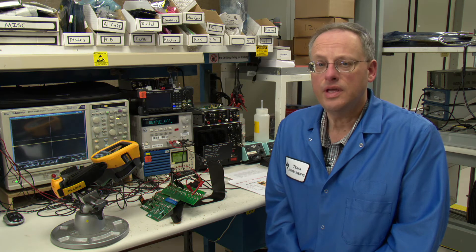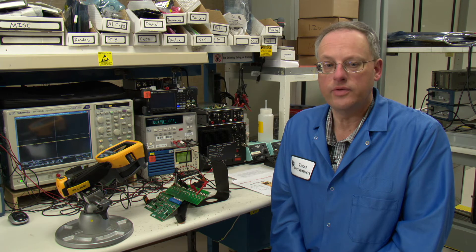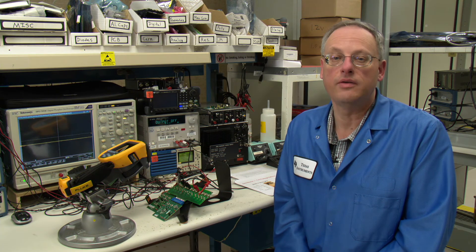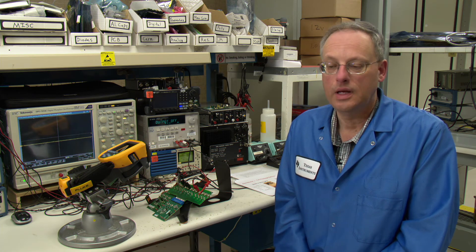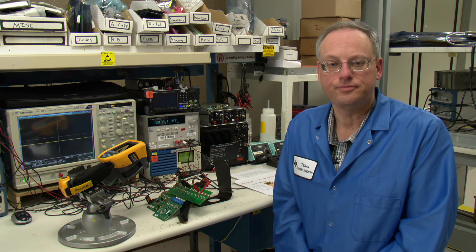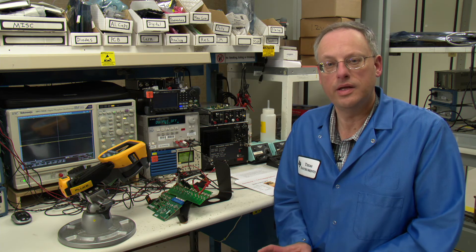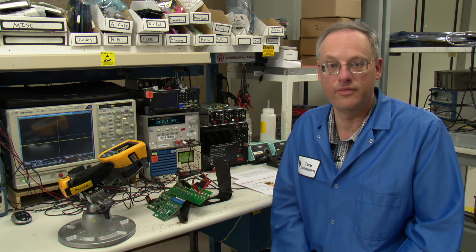So there are a few things you have to remember when you're going to make an accurate thermal measurement. First of all, you have to make sure that there aren't any air currents flowing around your EVM that could artificially cool down your actual measurement. Usually we have some kind of a barrier like a box around the EVM surrounding it so that air currents don't actually try to cool down the board artificially.